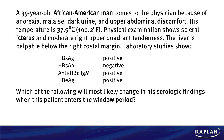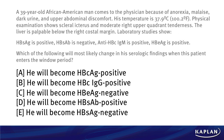The question asks: which of the following will most likely change in his serologic findings when the patient enters the window period? Make sure you're reading carefully on test day — it's not just knowing what diagnosis the patient has, but answering exactly what the question wants. The answer choices each describe what the patient will become: HBC antigen positive, HBC IgG positive, HBE antigen negative, HBS antibody positive, or HBS antigen negative.